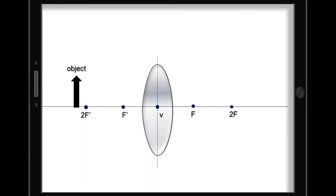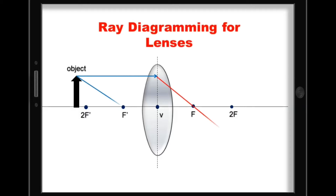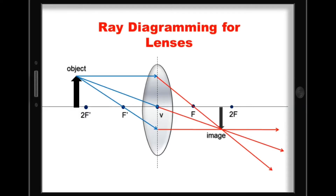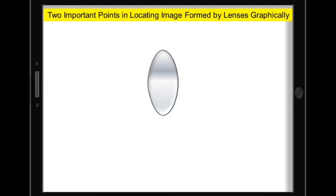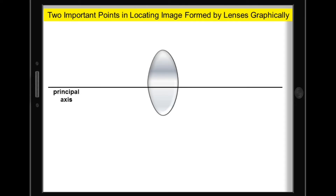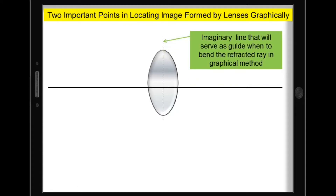To describe the images formed by lenses, we can use the graphical method through ray diagramming. Just like in curved mirrors, there are two important points that you need to label in your ray diagram for lenses. But first, you need to draw the principal axis. You can also draw a vertical imaginary line that crosses the lens, which will serve as your guide when to bend the refracted rays.